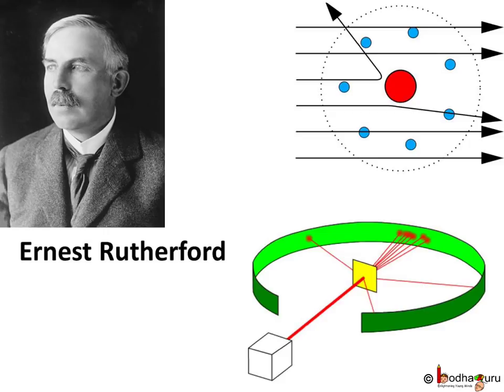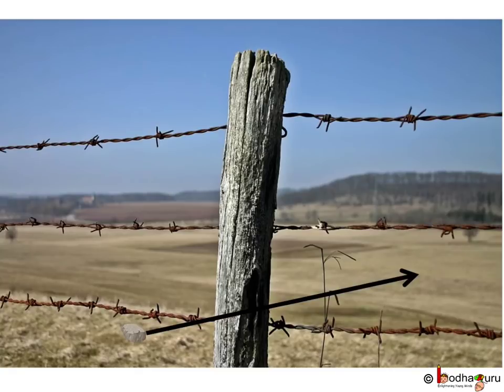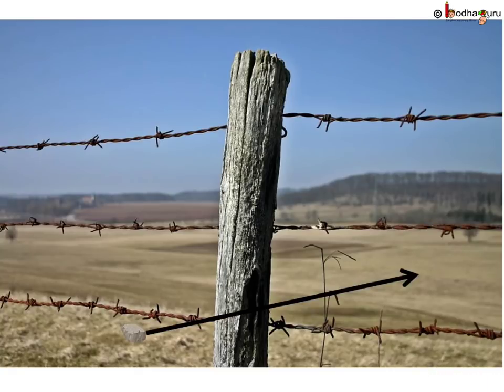What he observed was that most of the fast moving alpha particles passed straight through the gold foil, which means most of the space inside the atom is empty. It's like throwing stone through barbed wire fence, hence most of the stones would not hit anything.